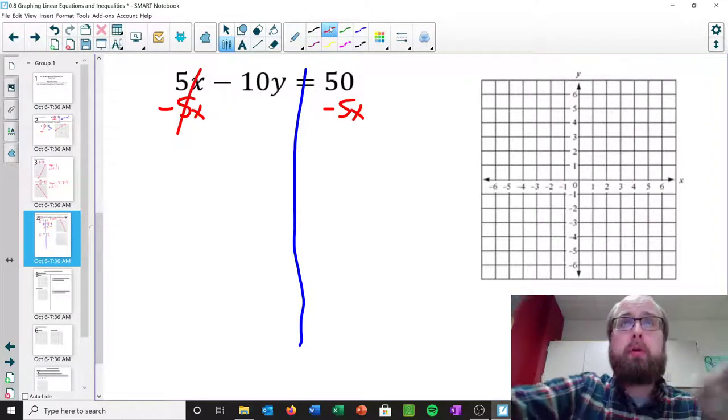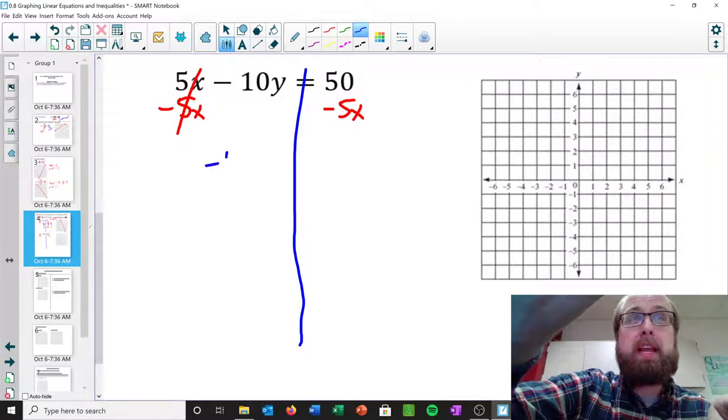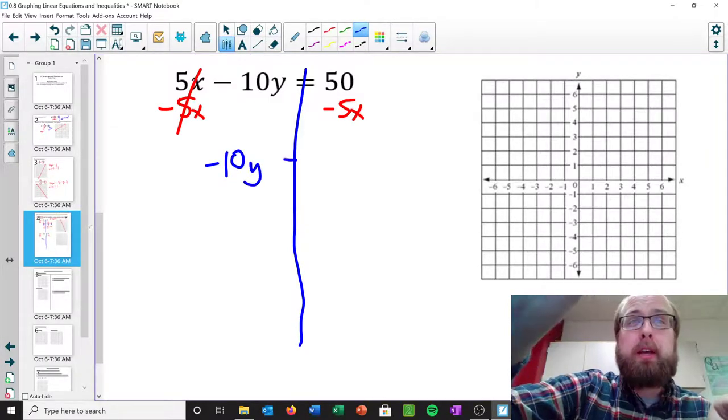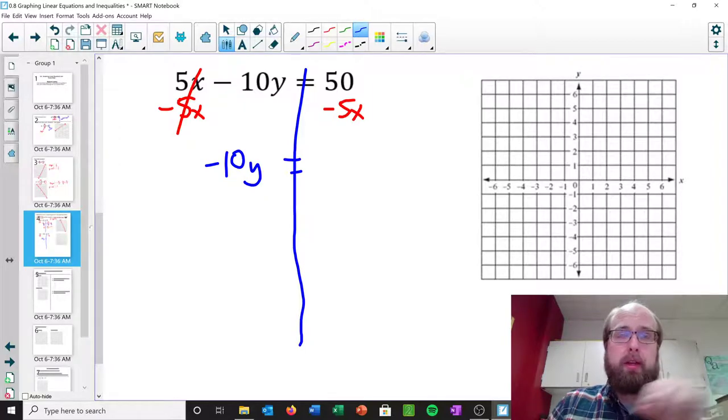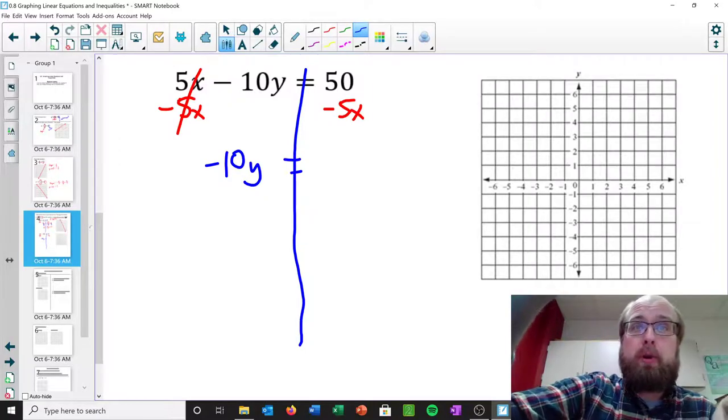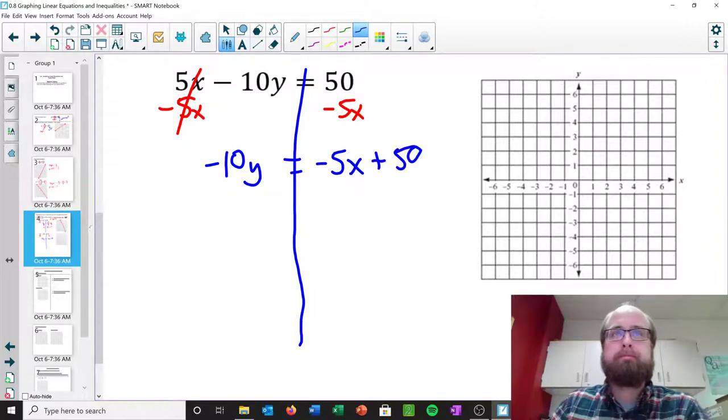All right, and what are we left with? Well, on the left-hand side, we'll be left with negative 10y. And a really common mistake is leaving that negative off. You've got to make sure you drop it down. That's not just 10y, it's negative 10y. Then, on the right-hand side, again, you could write it as 50 minus 5x, but I prefer to write it as negative 5x plus 50.